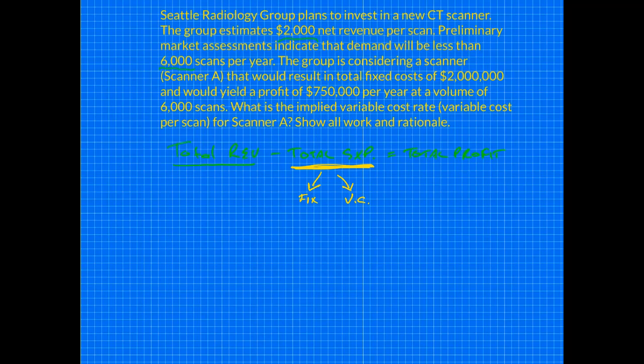We know we have a revenue number per scan at $2,000, and we know the number of scans, so that helps. We're going to build that total revenue number by taking $2,000 and multiplying it times the projected number of 6,000 scans. Doing the math — you can do that in your head, actually — that will be $12,000,000. So we now know that total revenue is $12,000,000.